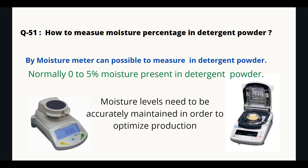How to measure moisture percentage in detergent powder? By moisture meter, it is possible to measure detergent powder. Normally, 0 to 5 percent moisture is present in detergent powder. Moisture levels need to be accurately maintained in order to optimize production.